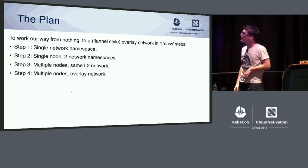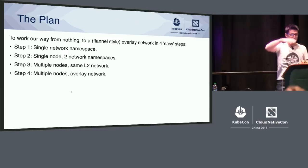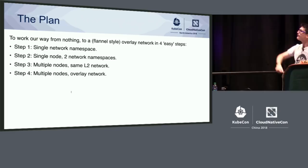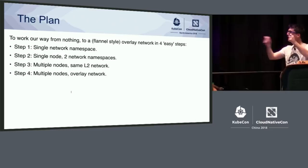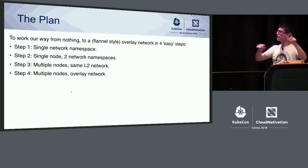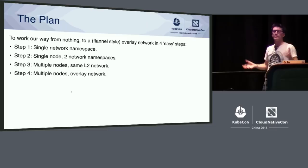The four steps are as follows. First, I'm going to look at the simplest possible thing — just a node with a network namespace, and look at how that can connect to the node. Next step, we stay on one node but have two network namespaces and look at how you can send packets between them. Then we move to two nodes and look at how packets go between containers, but on the same L2 network. Finally, the more general case: two nodes separated across different networks.